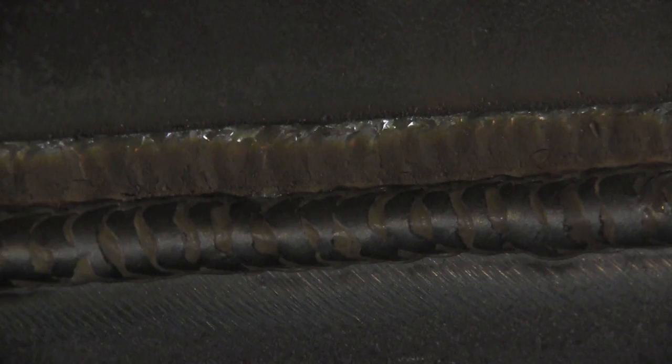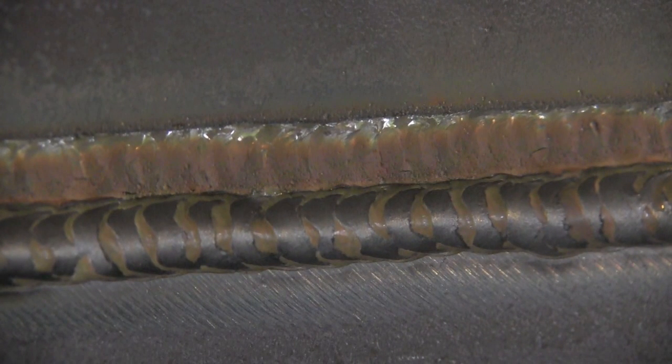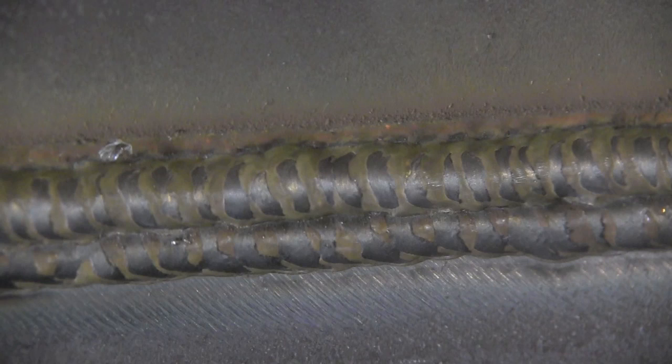We'll speed this up now. That's the first bead on the cover pass. It's different than the 7525, but not a whole lot different. Smooth arc, just like I said, as you can see the puddle kind of following the arc here. You can see that's not a hot, hot puddle.